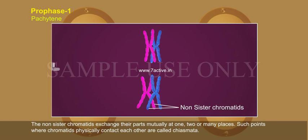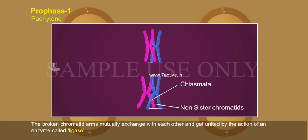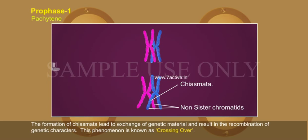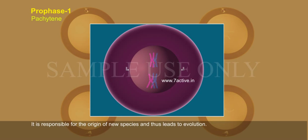Such points where chromatids physically contact each other are called chiasmata. During the formation of chiasmata, the chromatid arms first break due to the action of an enzyme called endonuclease. The broken chromatid arms mutually exchange with each other and get united by the action of an enzyme called ligase. The formation of chiasmata leads to exchange of genetic material and results in recombination of genetic characters. This phenomenon is known as crossing over, and it is responsible for the origin of new species, thus leading to evolution.